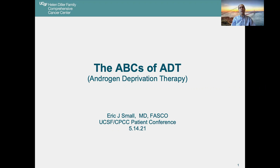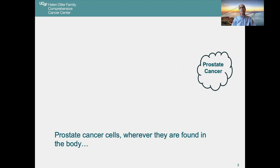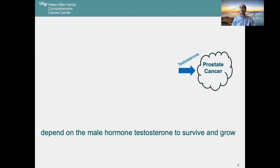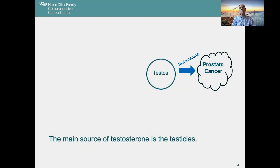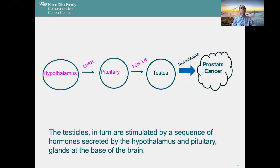I've been asked to talk to you about androgen deprivation therapy, which we'll term ADT for short. Prostate cancer cells, wherever they are found in the body, are dependent on the male hormone testosterone to survive and to grow. Testosterone is produced by the testicles, which in turn are stimulated by a sequence of hormones secreted by the hypothalamus and pituitary glands, which sit at the base of the brain. This hormone cascade is the basis of testosterone making prostate cancer grow.